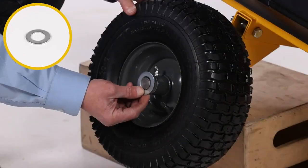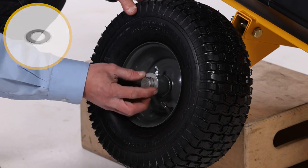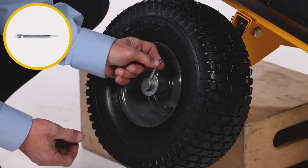Then slide on a 1-inch SAE washer, Part Q, and secure the assembly with a 2-inch cotter pin, Part V.